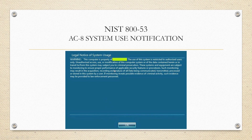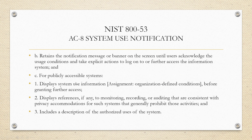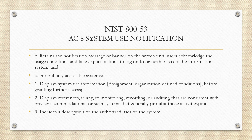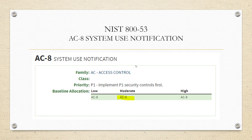For this control, AC-8, it's just a punch list of what has to be within the usage notification. I like to end these presentations with a screenshot of the NIST website and the guidance. Looking at AC-8 System Use Notification at the moderate impact baseline, there are no enhancements — it's all built into the control itself. As you can see, it's very lengthy with a lot of requirements for what's required in that notification. Thanks for tuning in to Audit Trails, and we'll see you on the next one.